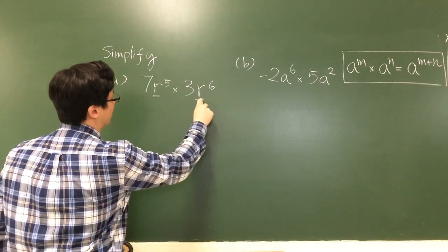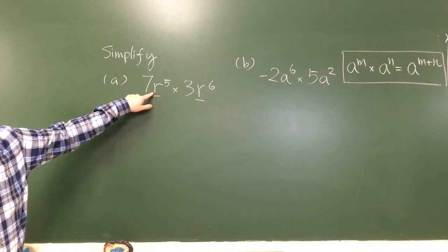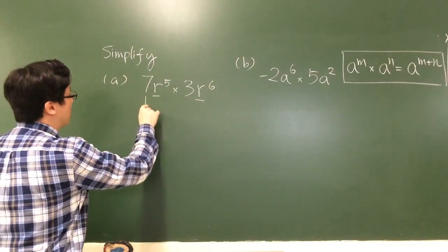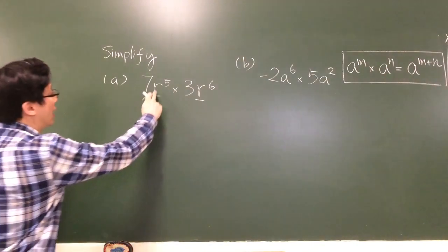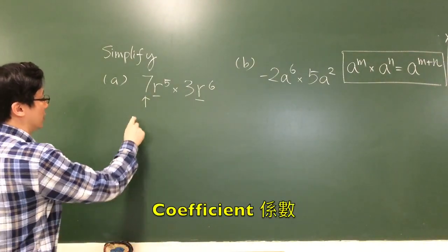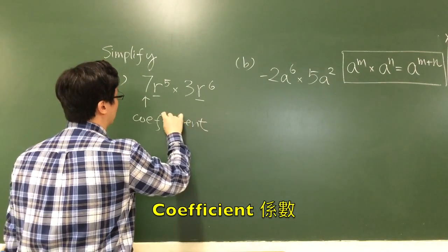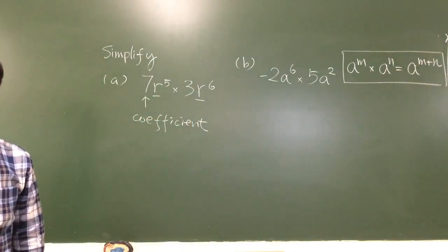r to the 5, r to the 6. The base is r, but the number before the variable r, we call this the coefficient of the term r to the power of 5.